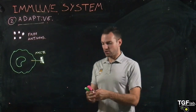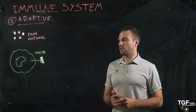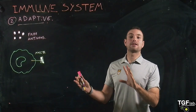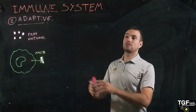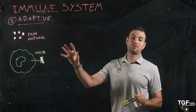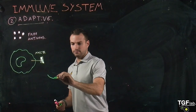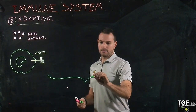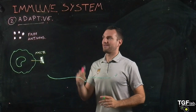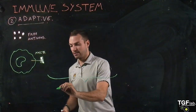So these are going to travel to the lymph nodes, and everything is going to happen in the lymph nodes — in comparison to the innate immune system, which happens more or less locally. So most of the stuff in the adaptive immune response is going to happen in the lymph nodes.